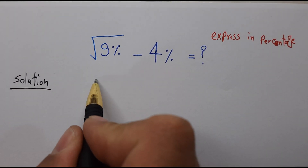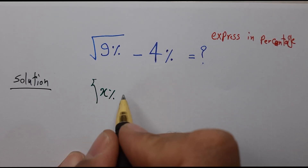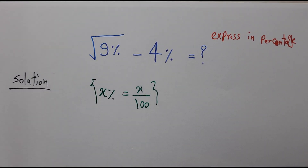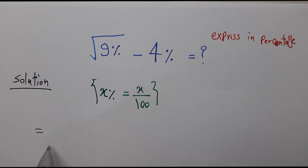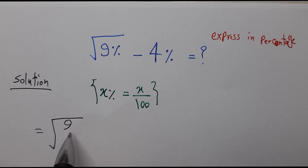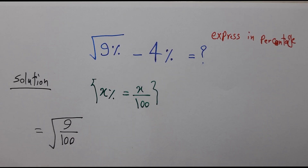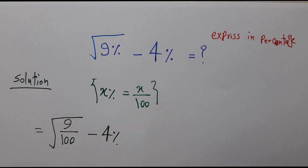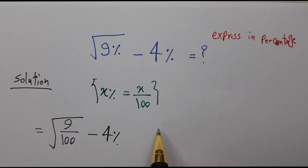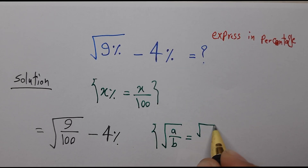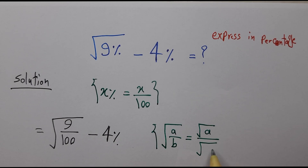As you know, x percent is x over one hundred. So we have square root of nine percent, which is square root of nine over one hundred, minus four percent. And we have that the square root of a over b is square root of a over square root of b.